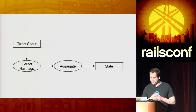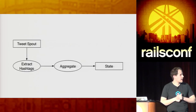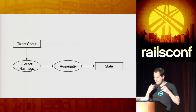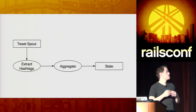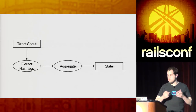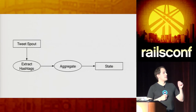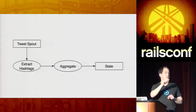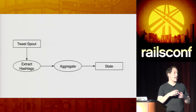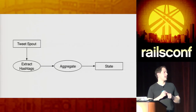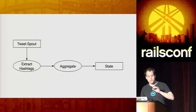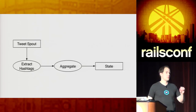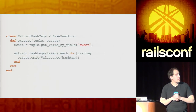Let's go back to the Twitter hashtag example. This is what it could look like as a Storm topology. You'd start with a tweet spout — however you decide to get your tweets in, via Redis, via directly the Twitter API, whatever. You'd pass it to a transform whose only goal is to get the tweet body, extract the hashtags, and output them as tuples. The next step is going to be an aggregate, which will get all the hashtags, track how many counts there are, and send that to the state. The state is going to do the moving average calculation.